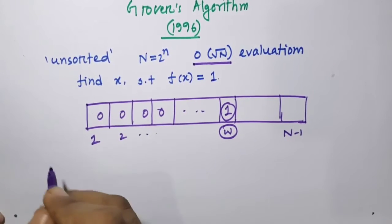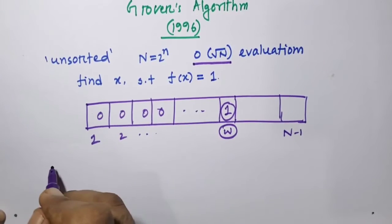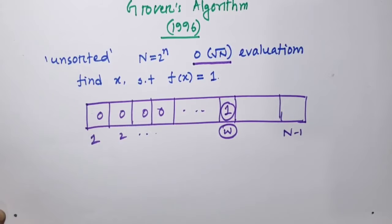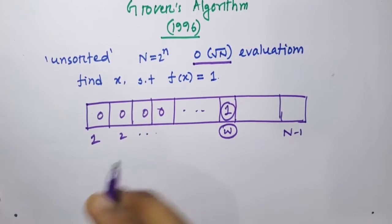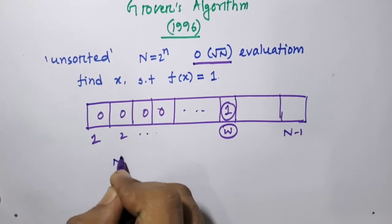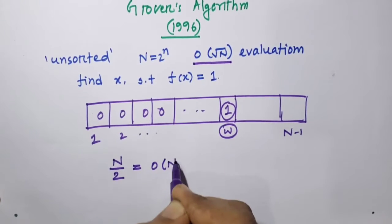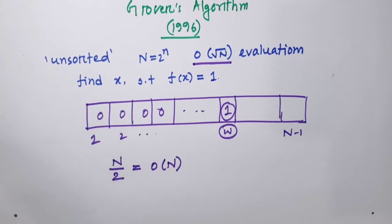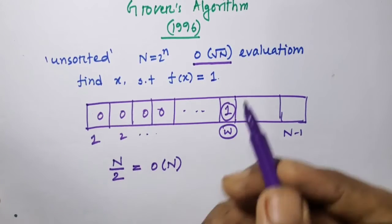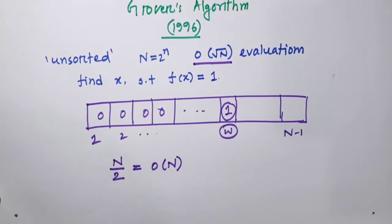Let us see how the classical algorithm works. In a classical computer, we can find this value by an average of n by 2 evaluations, which is in the order of n. So we see Grover's algorithm claims a drastic reduction in the number of evaluations.